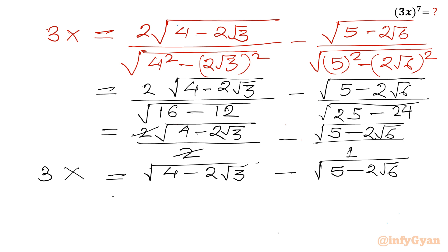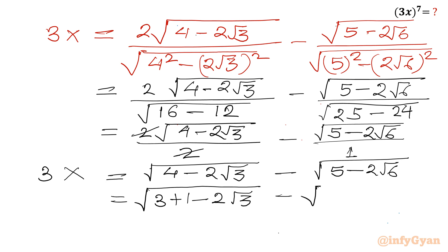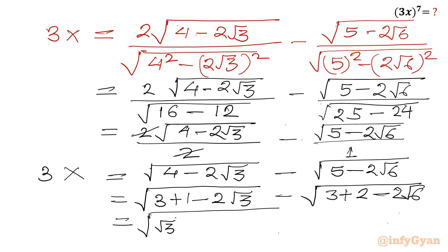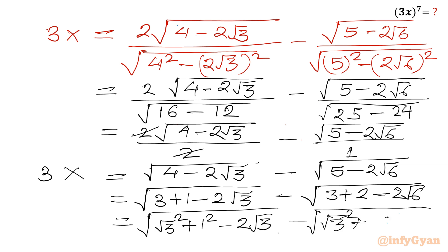Now I will split 4 and 5. I can write 4 − 2√3 as 3 + 1 − 2√3, which is (√3)² + 1² − 2√3. And for 5 − 2√6 I write 3 + 2 − 2√6, which is (√3)² + (√2)² − 2·√3·√2. The first radicand is (√3 − 1)² and the second radicand is (√3 − √2)².